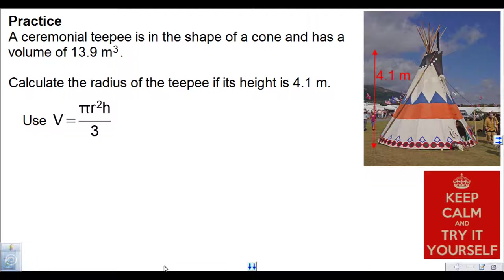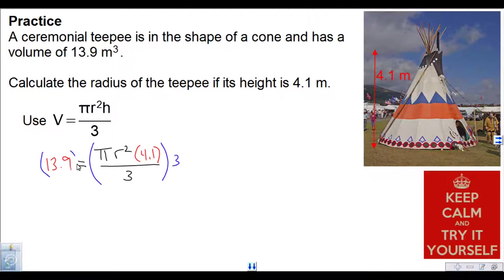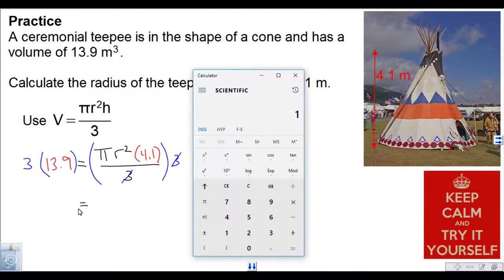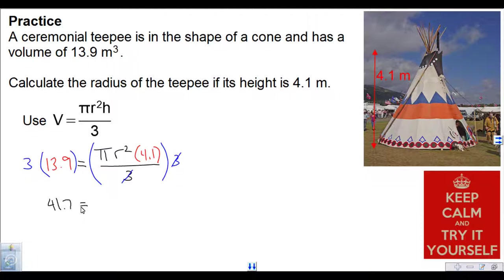The volume was given to us as 13.9, and that's equal to pi r squared, with the height given as 4.1, then divided by 3. When you've got a 3 as a denominator and you want to get rid of it, you multiply it away. Those 3's multiply out, so we do 3 times 13.9: 41.7 is equal to pi r squared times 4.1.